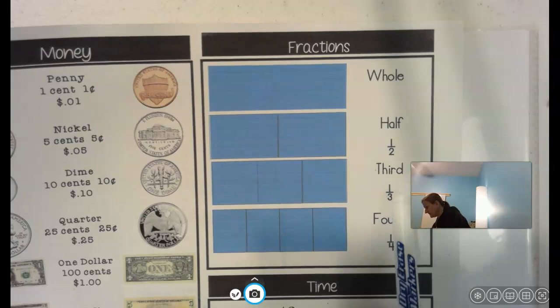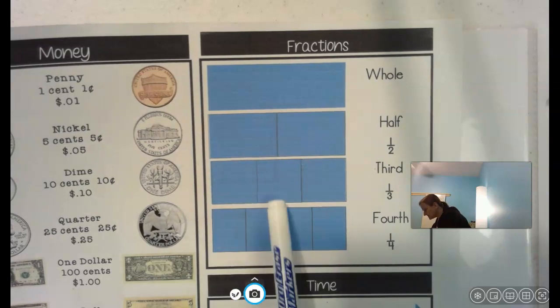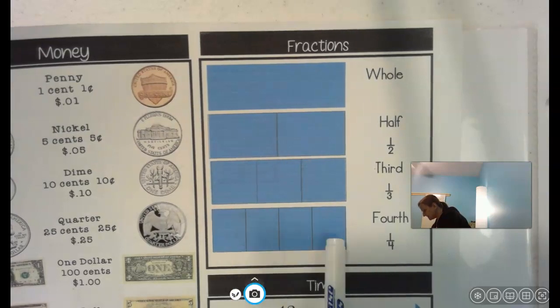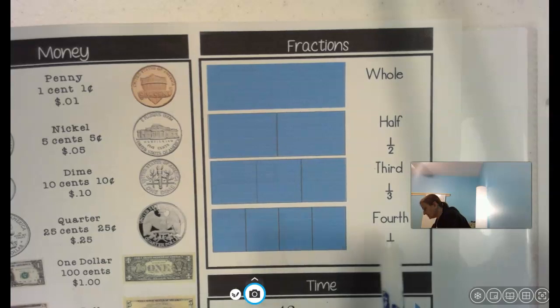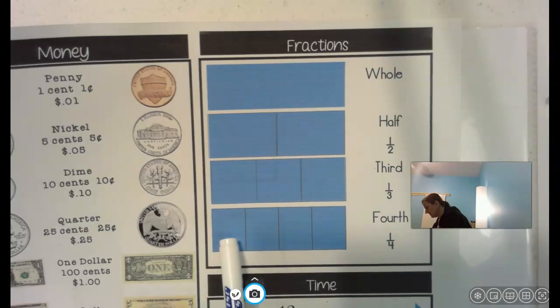If they take that same whole and cut it into four equal parts, these parts are exactly the same size. They call that fourth. Fourth means four. If I give you one of these, I'm giving you one fourth.